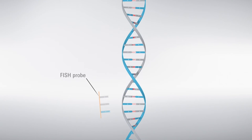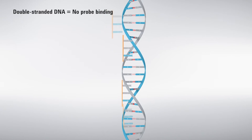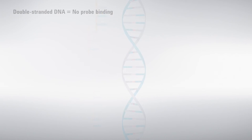DNA is made up of two complementary strands bound together, forming the double helix. Fish probes are not able to pair up with their complementary nucleotide sequences unless the two strands are separated.